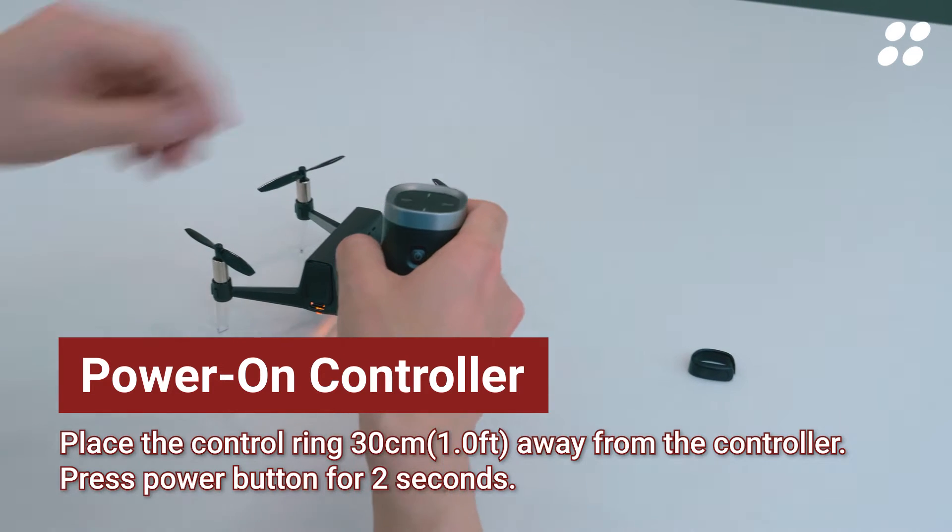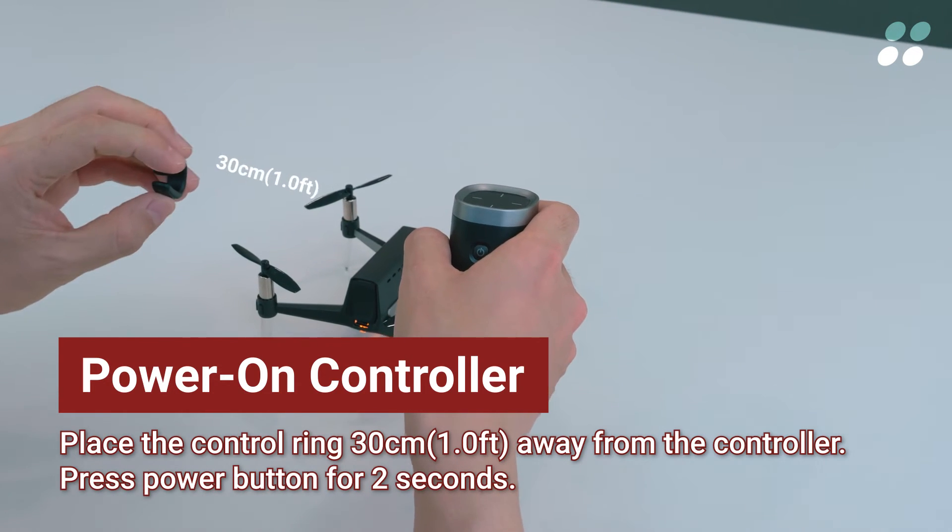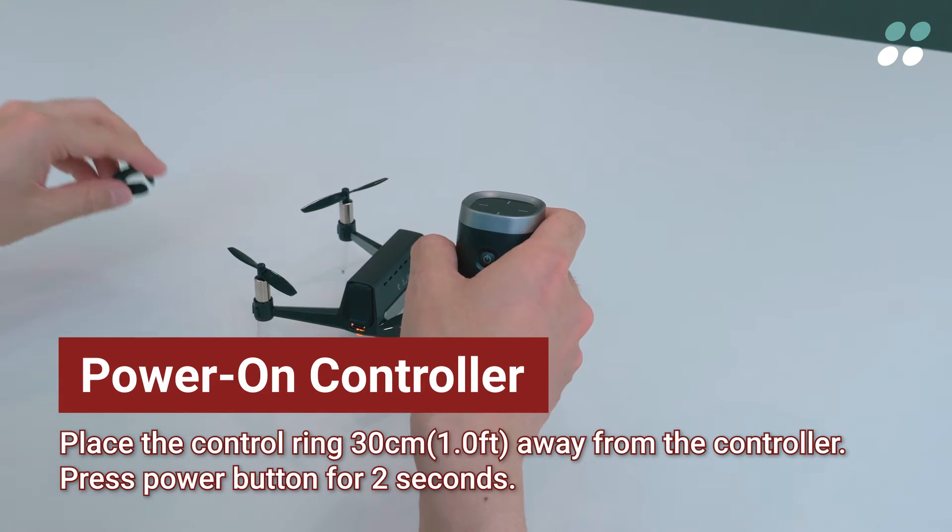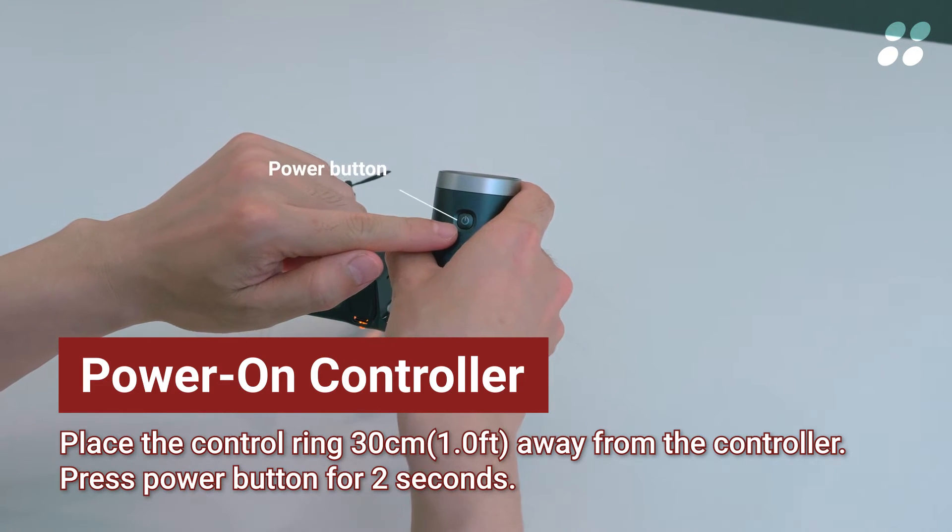To power on the controller, place the control ring one foot away from the controller first. Then, press power button on the controller for 2 seconds.